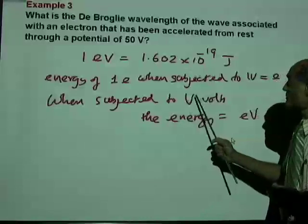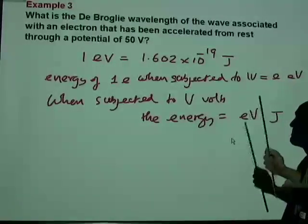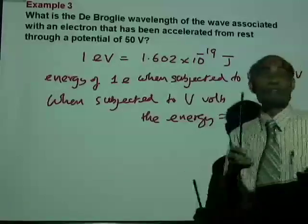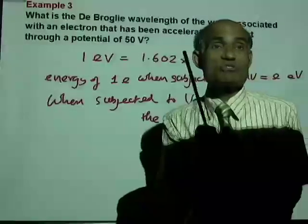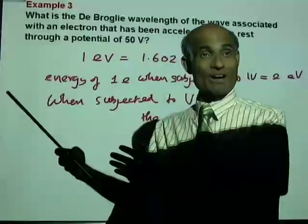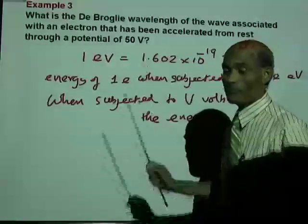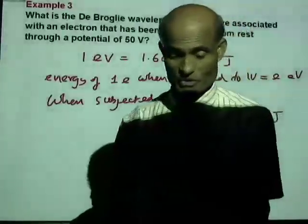the kinetic energy it will acquire will be E times V joules. And we can take that E times V joules and equate it to one half m V squared and calculate the velocity of the electron from this given data. That's what we're going to do.